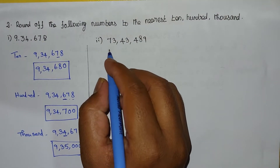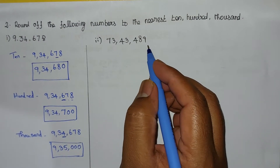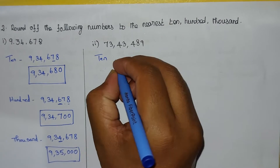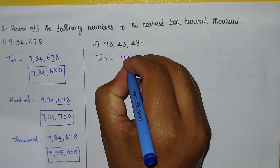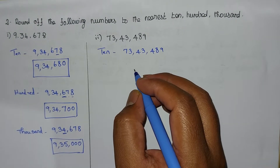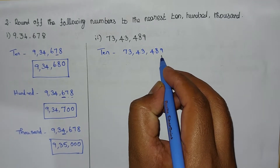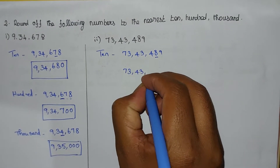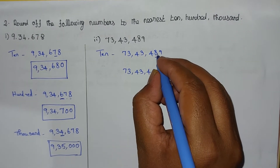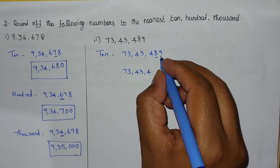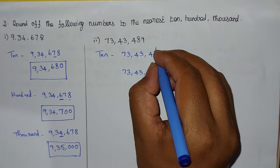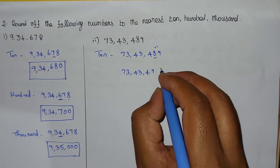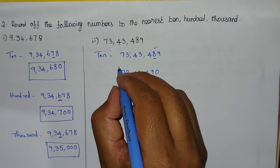Now, second problem: 73,43,489. We need to find the nearest 10, 100, and 1000 values. First, the 10s position: the digit is 8. The right-hand side number is 9, which is greater than 5. So we add plus 1: 8 plus 1 equals 9. The right-hand side digit becomes 0. This is the answer.